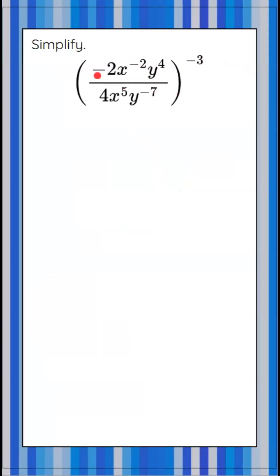We're asked to simplify negative 2x to the negative 2 times y to the 4th, divided by 4x to the 5th, multiplied by y to the negative 7, and this entire value is raised to an exponent of negative 3.